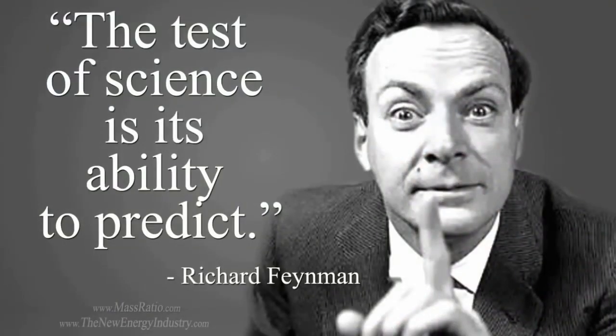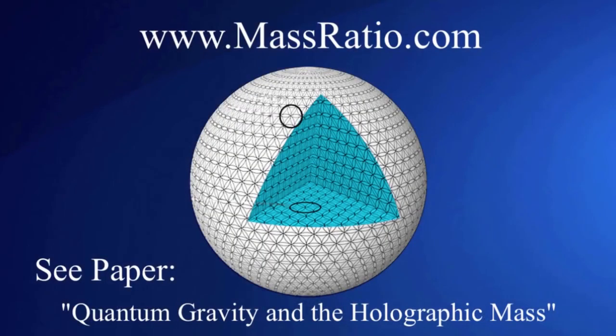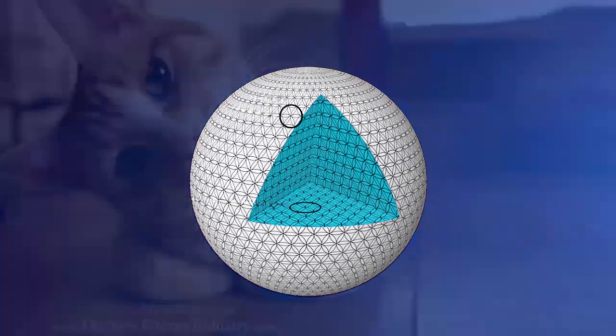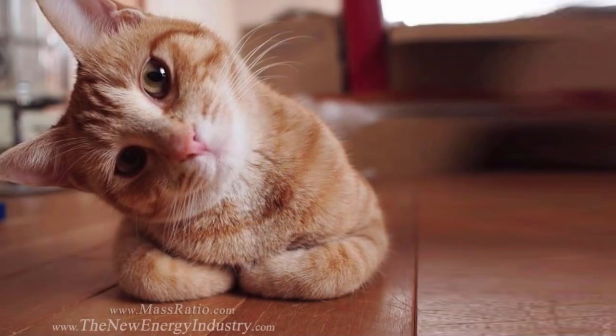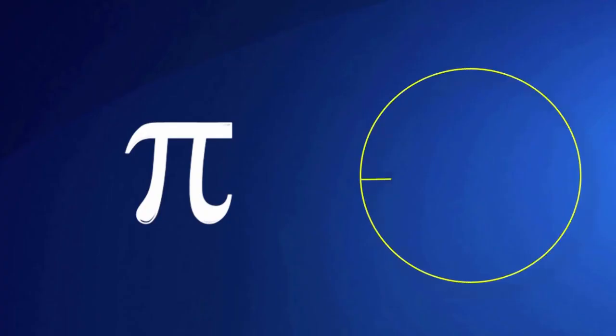The test of science is its ability to predict, and the mass ratio is proving to be one of the coolest scientific tools science has ever had. Okay, cool. But I'm still wondering what is the mass ratio? Well, you know how pi is the ratio between circumference to diameter?